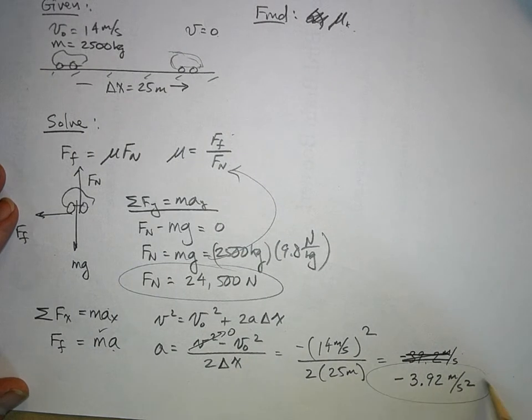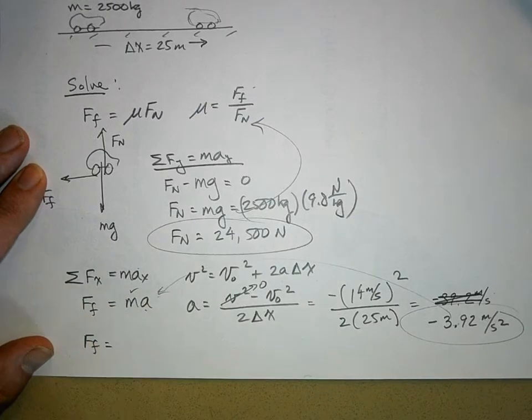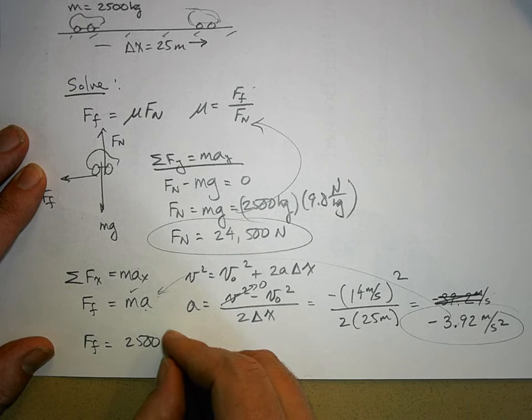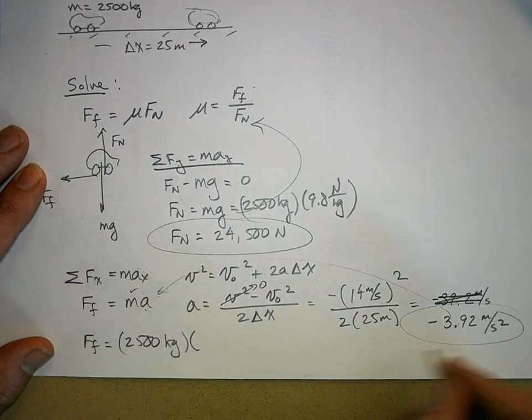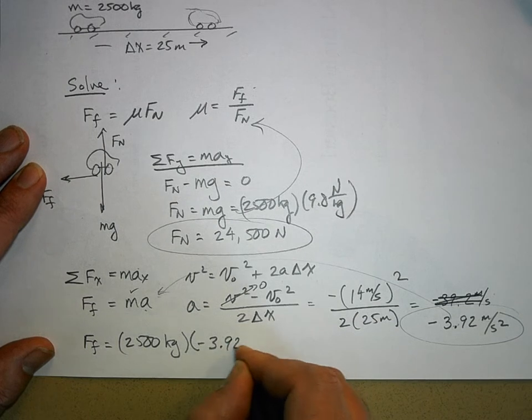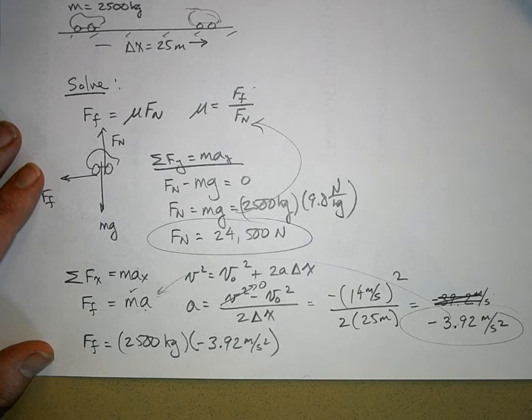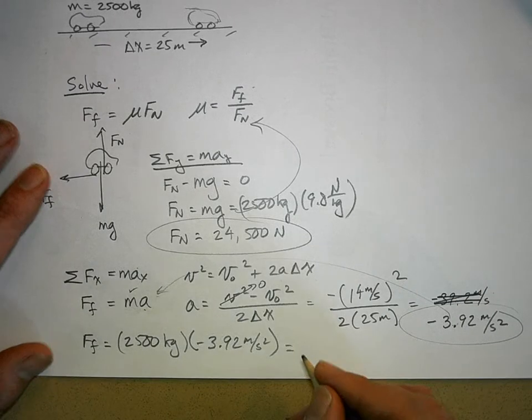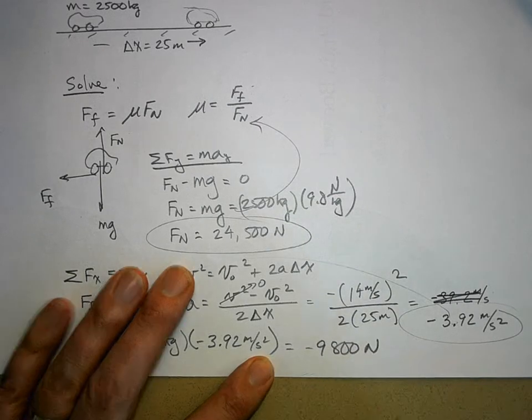Now, this tells me what the acceleration is. So now I plug that in. So the force of friction is equal to 2,500 kilograms times negative 3.92 meters per second squared. What is it that when I multiply them together? Negative 9,800 newtons.